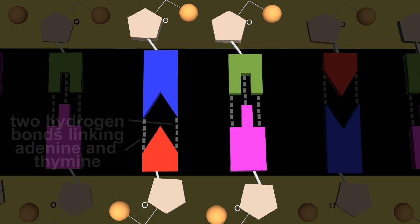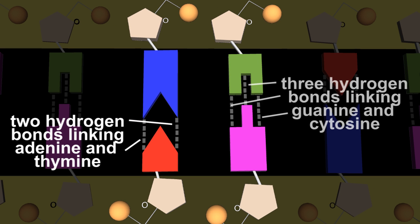Adenine always links to thiamine by two hydrogen bonds, and guanine always joins to cytosine by three.